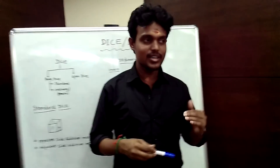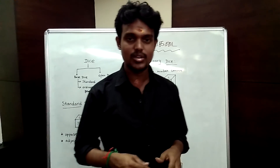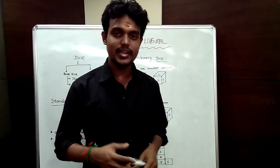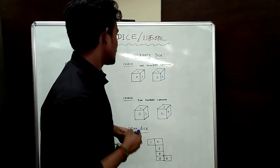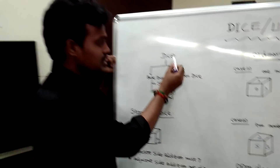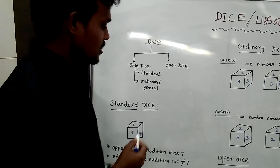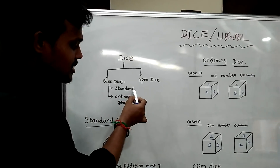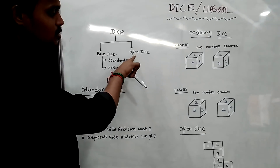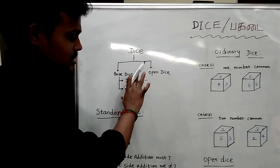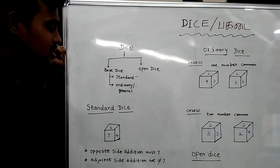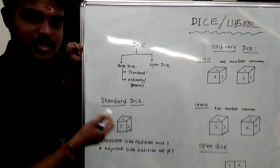So, if you have a DICE, there are 2 types of DICE: 1 base DICE and 1 open DICE. Let's say the base DICE and standard DICE. Open DICE is normal and base DICE has 2 types. So DICE is the best DICE or open DICE.